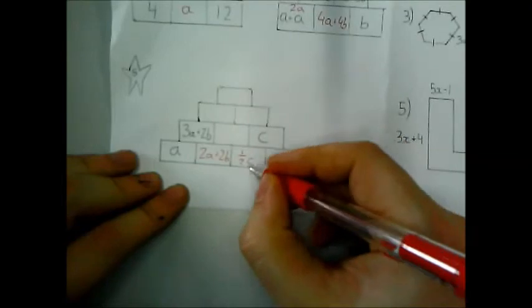OK. So here, I've got a half c already. I just need 1c. So clearly, I need another half c. So the half c plus half c is 1c.